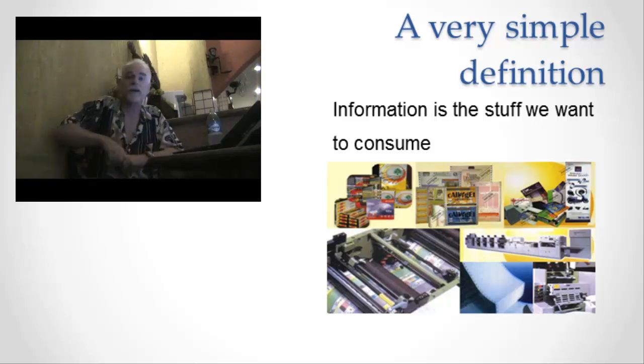So let me give you a very simple definition, the one we'll work with for the rest of this class. Nothing complicated at all: Information is the stuff you want to consume—the books, the music, the video, the sound, all those different things. The web pages, the blogs, the Wikipedia articles, the Facebook profiles. All the stuff that you want to consume is information.